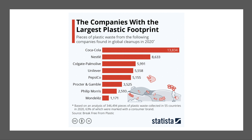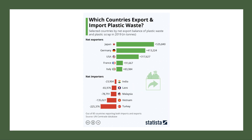Which companies have the largest plastic footprint? According to the annual survey from pressure group Break Free from Plastic, over nearly 14,000 branded items found in 51 countries had Coca-Cola as a recognised brand on the packaging. Coca-Cola has by far the biggest plastic footprint in the world in 2020, followed by Nestlé, then Colgate-Palmolive and Unilever. Many of the world's big fast-moving consumer goods companies are huge generators of waste.